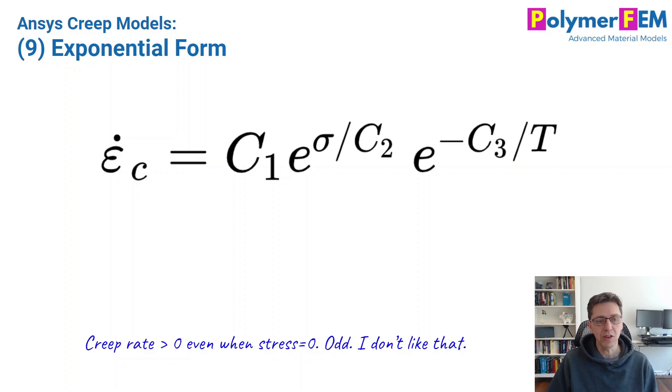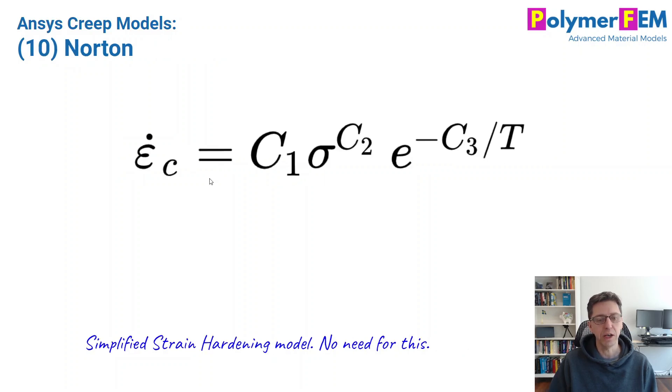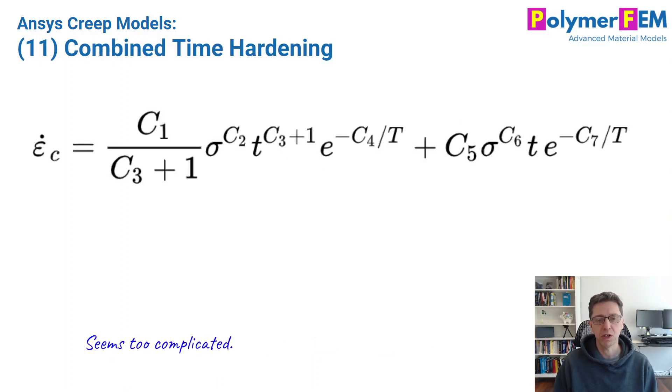The next one is a long list here, right? Exponential form is this called. And again, it's really odd. If you set stress equal to zero, you get a finite creep rate. I don't like that. So if you like that, go for it. I don't like it. I wouldn't use it. Norton is very well known. I use Norton creep for this. So this is just a simplified version of the strain hardening model. It is a steady state creep model because there is no strain or time dependence to it, but I wouldn't use it because I would use the strain hardening, which would allow me to also add strain dependence if needed. So this is a simplified version of that. Yeah, sure, you can use it, but I wouldn't pursue it because of its simplicity.